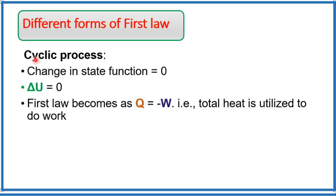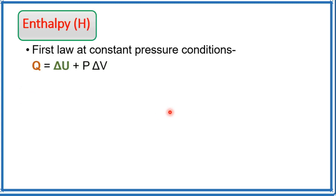In a cyclic process, the change in any state function is zero because the system undergoes many changes and returns to its initial state. Since internal energy U is a state function, ΔU becomes zero in a cyclic process. Therefore the first law becomes Q = −W, meaning the total heat absorbed is utilized to do work.